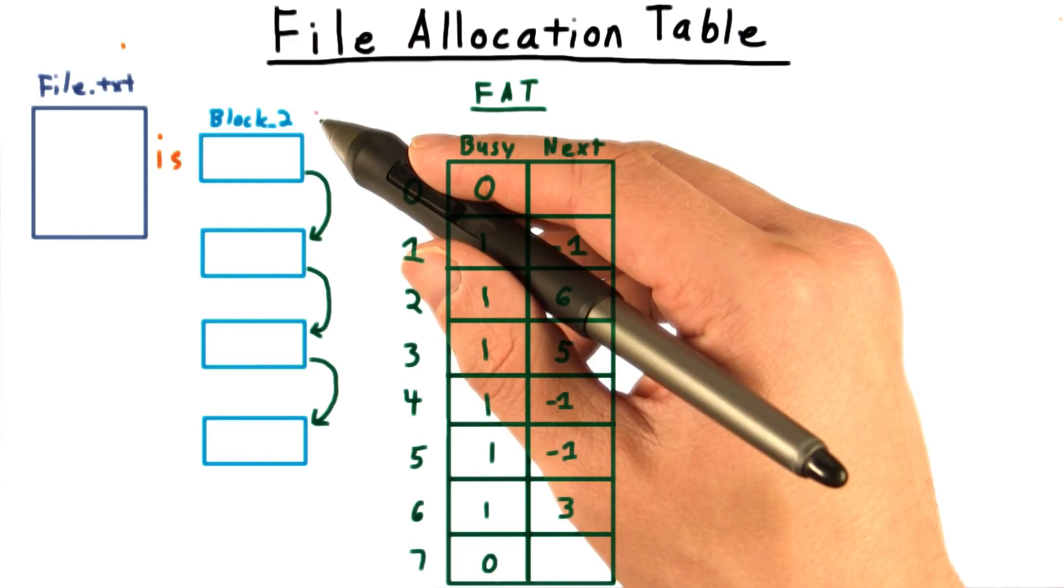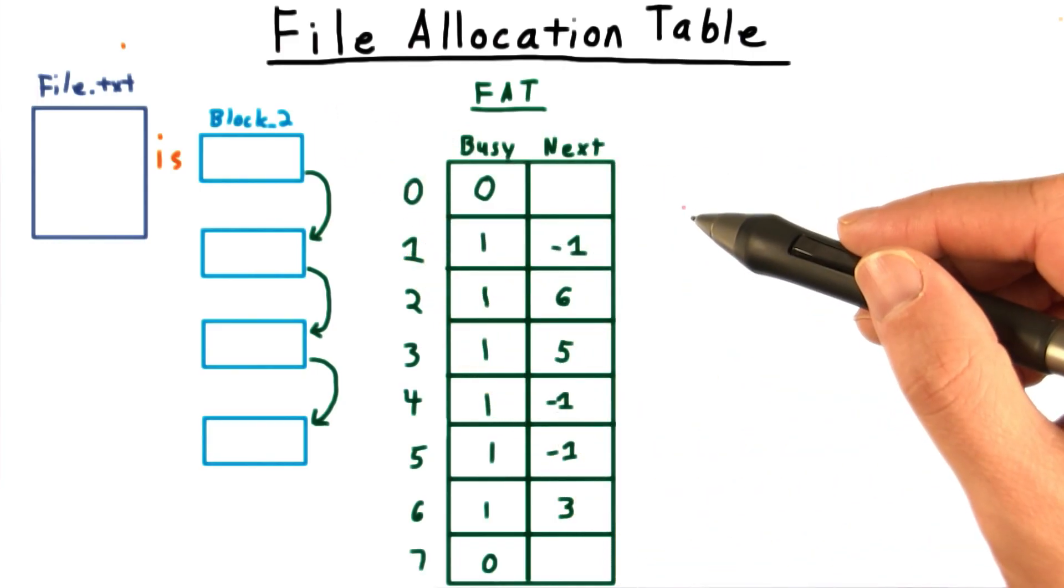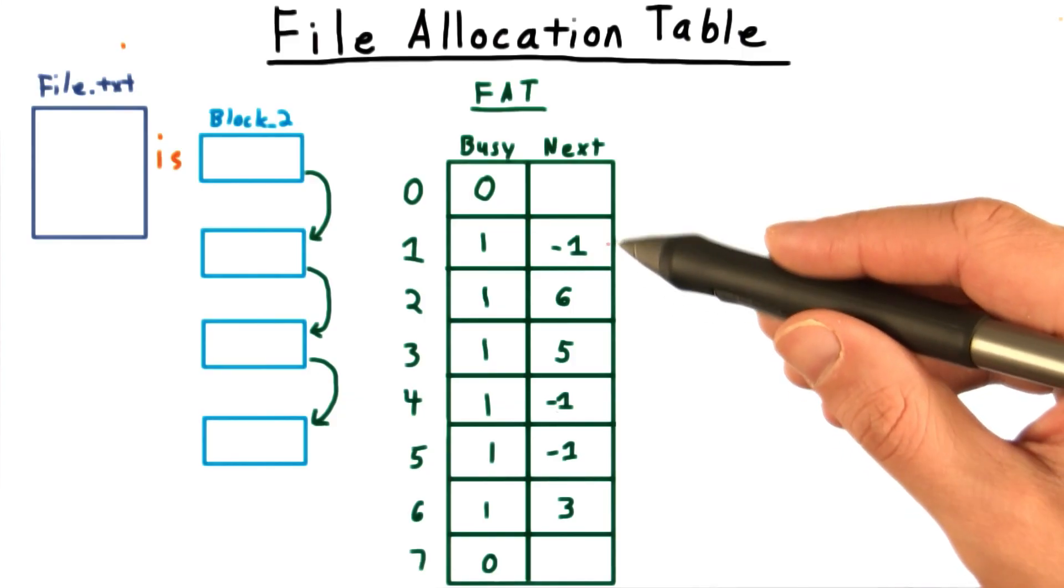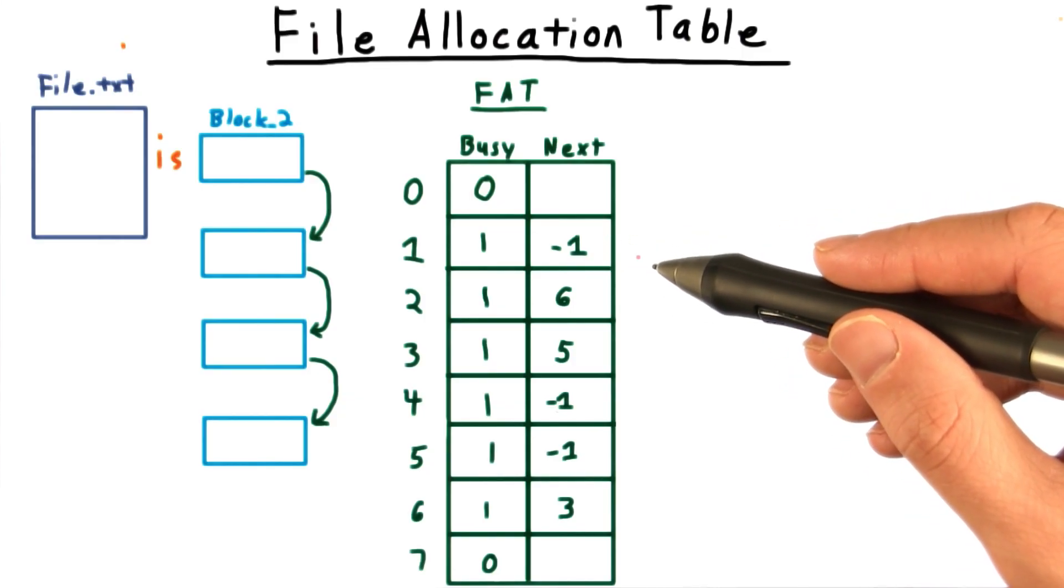Given the starting block number of a file, I can find the next block with a constant time access to the file allocation table. A special value, negative 1 in this example, indicates that a block is the last in the chain.